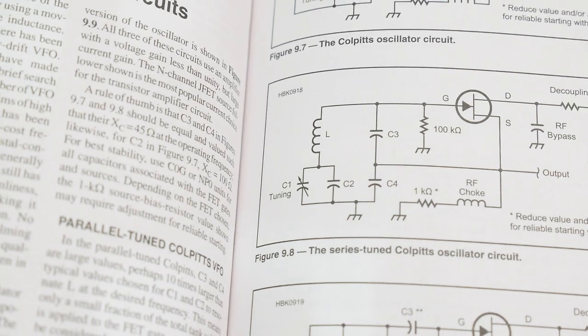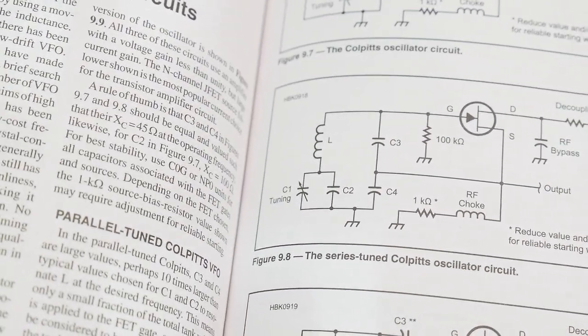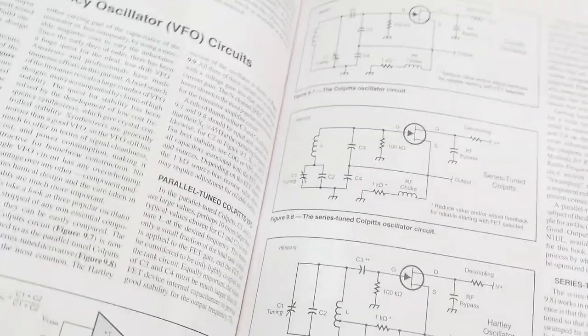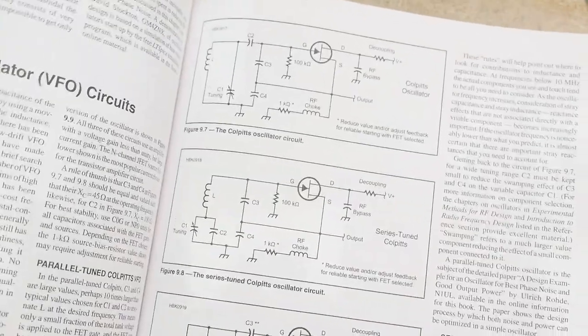You can find lots of examples of Colpitts oscillators. There's a bunch here in the book, this is the ARRL handbook. Lots of different ways to do it.